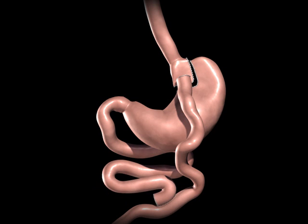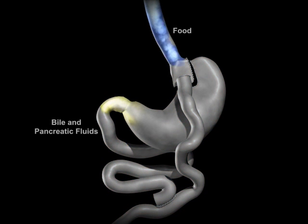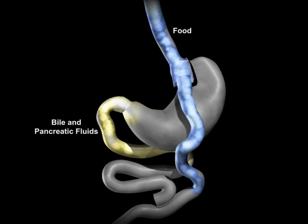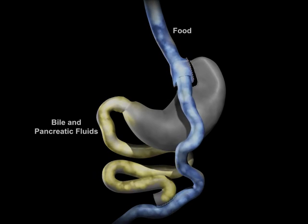The upper portion of the small intestine is reconnected to the lower portion of the intestine. The bile and pancreatic fluids from the liver and pancreas allow food to be completely digested. As with all weight loss procedures, behavior modification and dietary compliance plays a critical part in determining the long-term success of the procedure.